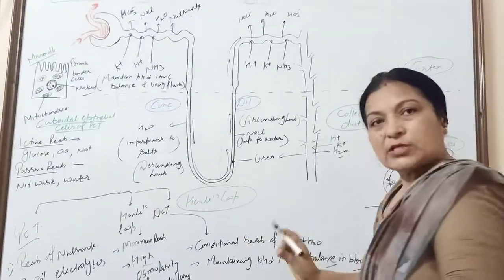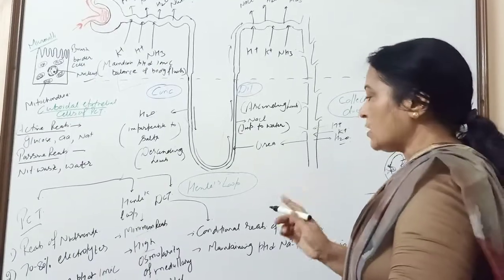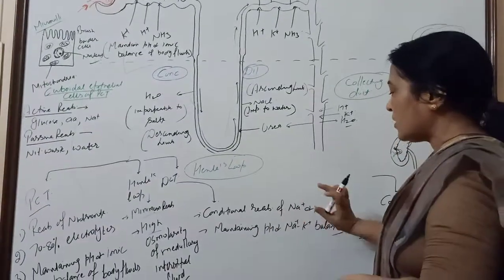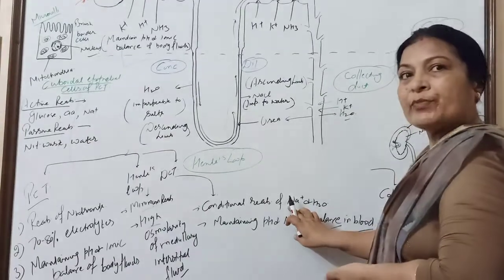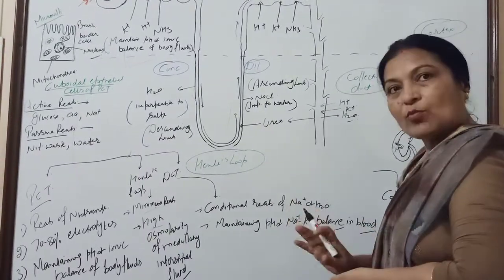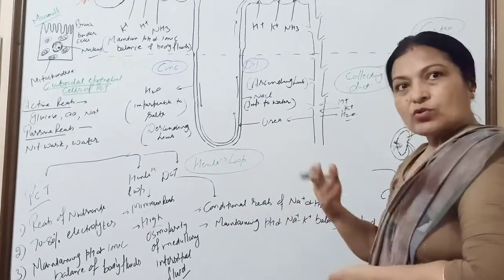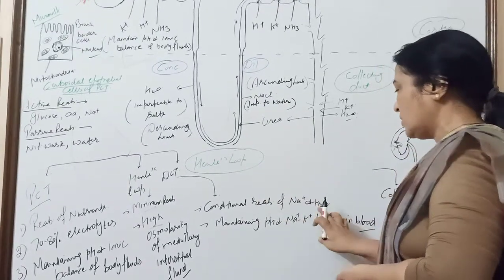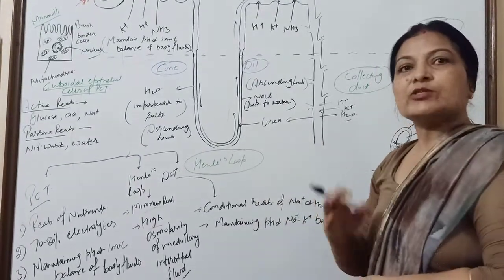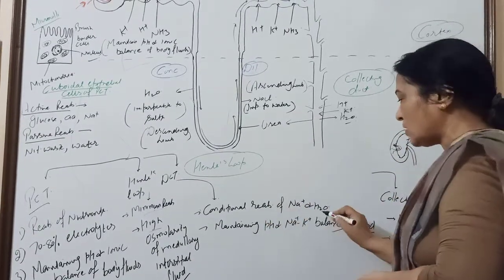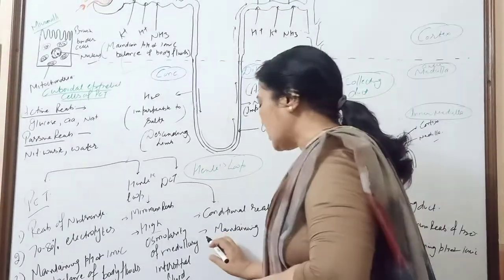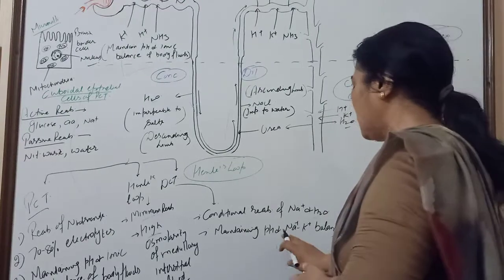The reabsorption of sodium is under the influence of hormones, the influence of cortisol and other hormones. Then water reabsorption - vasopressin, antidiuretic hormone, the influence of which it is. Then secondarily, which helps to maintain pH and sodium-potassium ion balance in blood by secreting hydrogen ion, chloride, and ammonia.